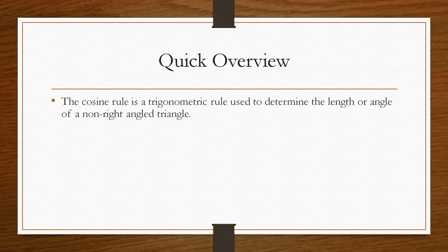So if we take a quick overview, the cosine rule is a trigonometric rule which can be used to determine the length or angle of a non-right angled triangle.